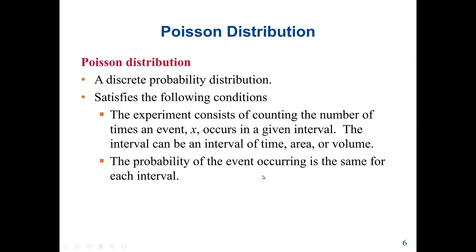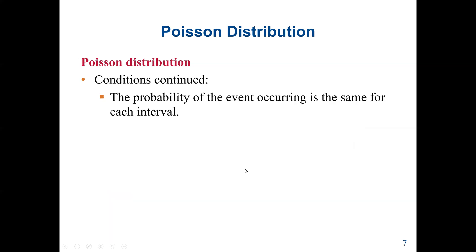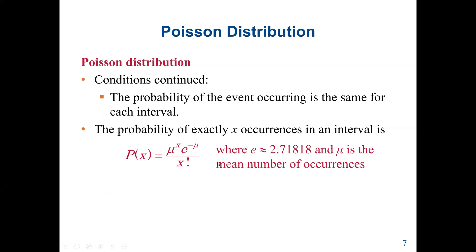The probability of the event occurring is the same for each interval, and the number of occurrences in one interval is independent of the number of occurrences in other intervals. The probability of exactly X occurrences in an interval is: mu raised to the power X, times E — the constant 2.71828 — raised to the power negative mu, all divided by X factorial.